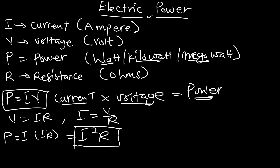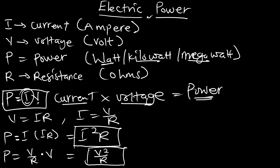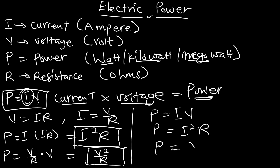We can also derive another expression. Replacing I with V/R and multiplying by V gives us P = V²/R. So we have three expressions for electric power: P = IV, P = I²R, and P = V²/R. All three expressions will help us calculate electric power.